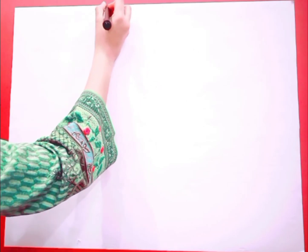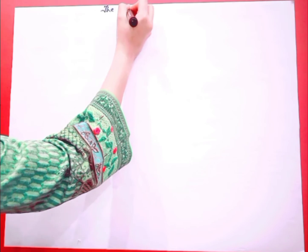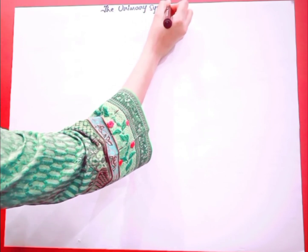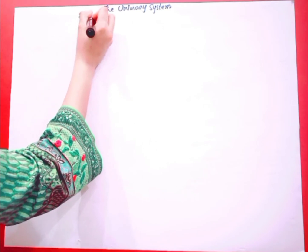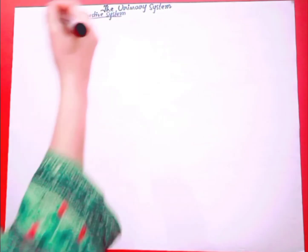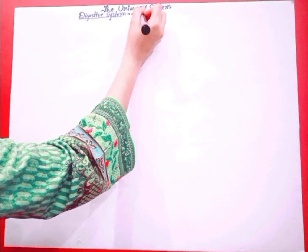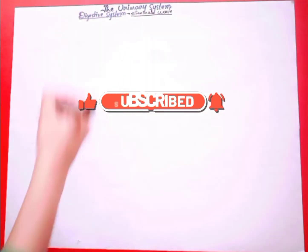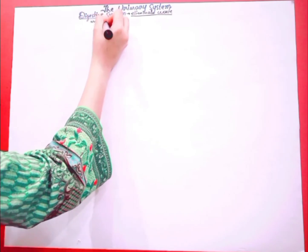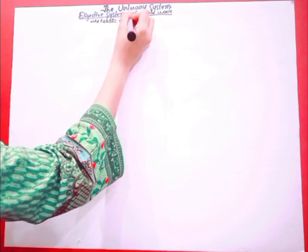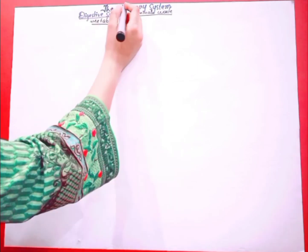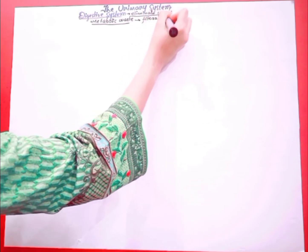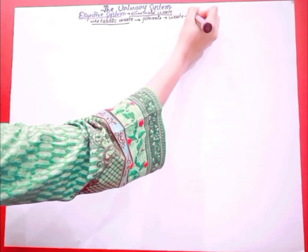Hello everyone, today our topic is the urinary system. We have discussed the digestive system. Our body has a digestive system in order to eliminate waste out of the body, but there are many metabolic wastes which are continuously circulating in the bloodstream, so our body has a urinary system in order to filtrate that waste and expel it out of the body.